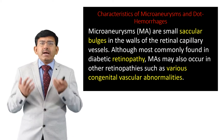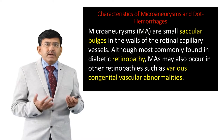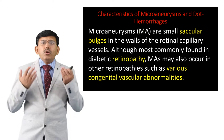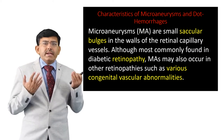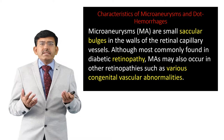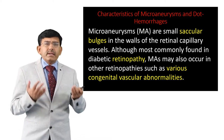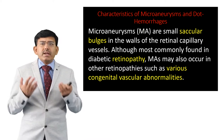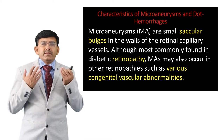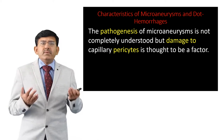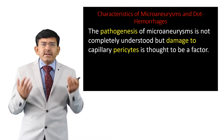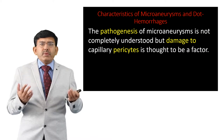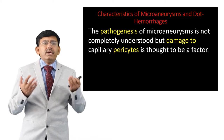Microaneurisms are small saccular bulges in the walls of the retinal capillary vessels, although most commonly found in diabetic retinopathy. Microaneurisms may also occur in other retinopathies such as various congestional vascular abnormalities. The pathology of microaneurisms is not completely understood, but damage to capillary pericytes is thought to be a contributing factor.